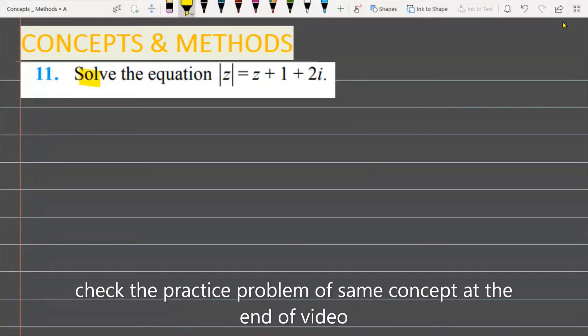The question is: solve the equation |z| = z + 1 + 2i. Let's see how we are going to solve this problem. First, I will note that in the question, it is provided that |z| = z + 1 + 2i.